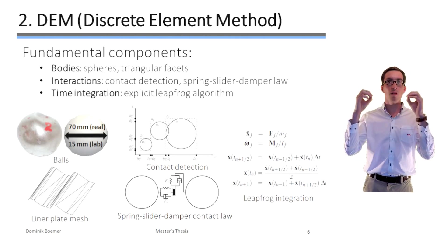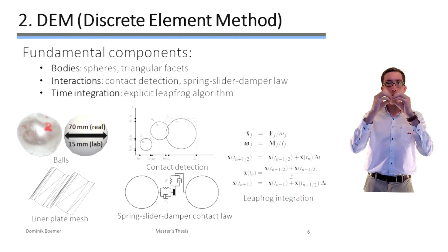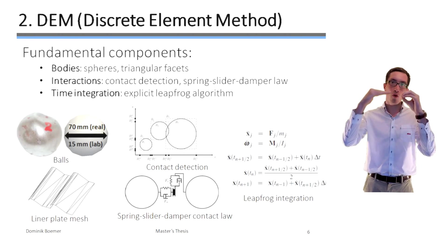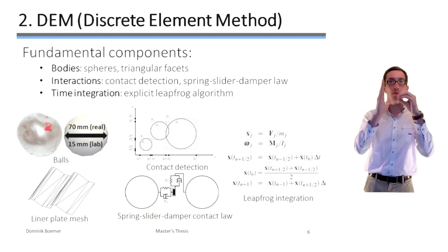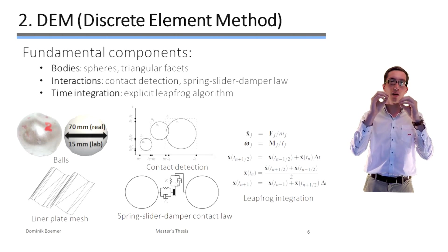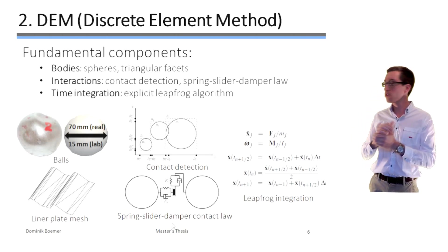So once these contacts are known, the absolute overlap and the overlapping velocities are transformed into a normal and a tangential collision force which is applied to both bodies on basis of the linear spring-slider-damper contact law.